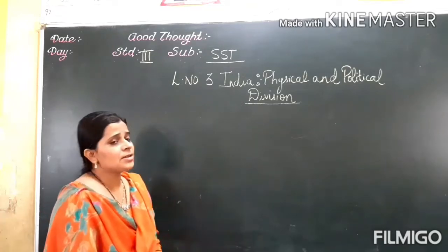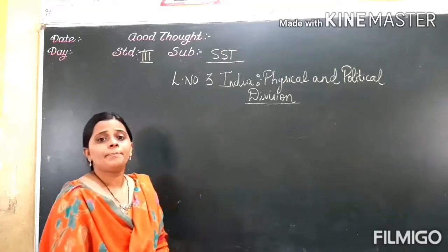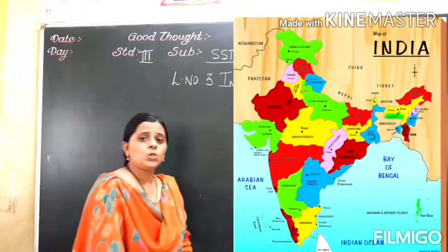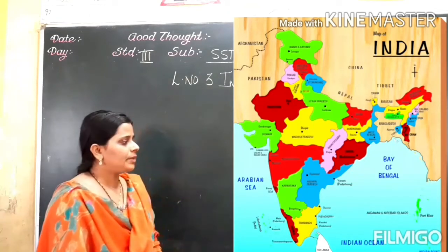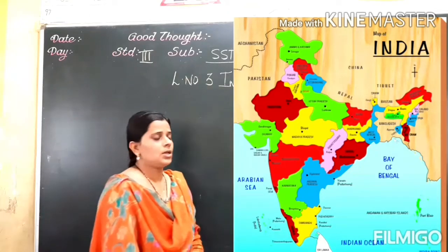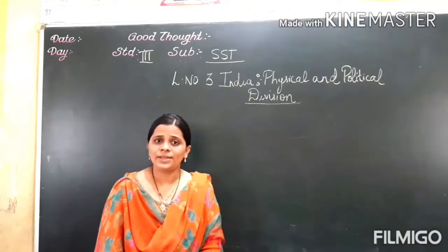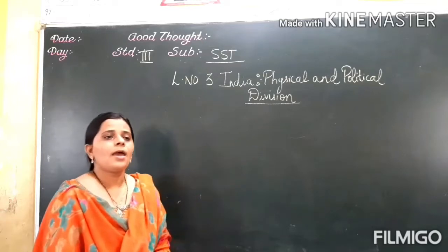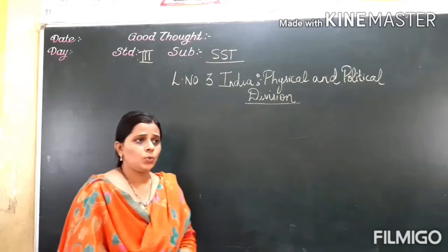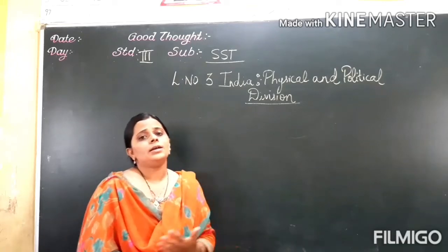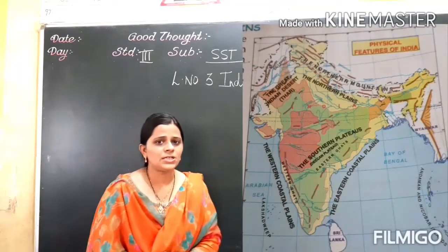In the introduction, we covered that India is bounded by the Indian Ocean in the South, Arabian Sea in the West, and Bay of Bengal in the East. We also discussed that India is the 7th largest country in the world. Now let us discuss India's 6 physical divisions.